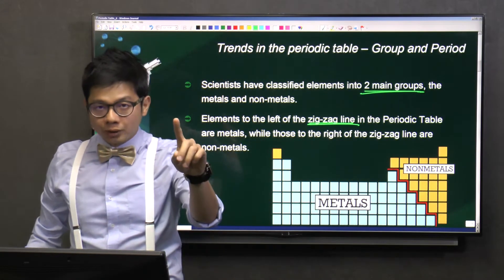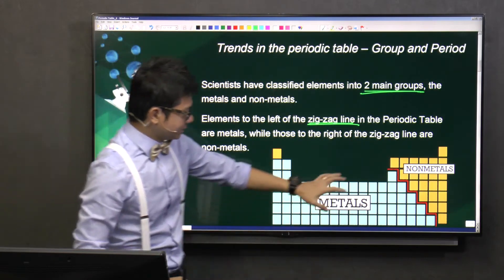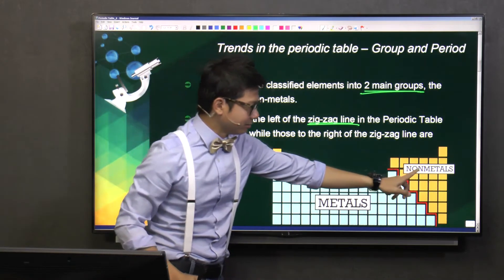And later on, I will show you exactly how to draw this zigzag line. So now, at this point of time, this zigzag line basically splits up the elements into matters and non-matters.